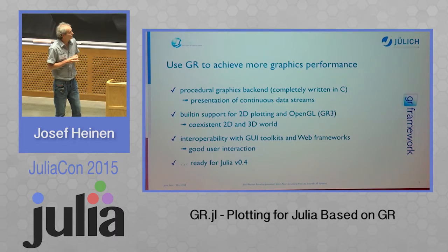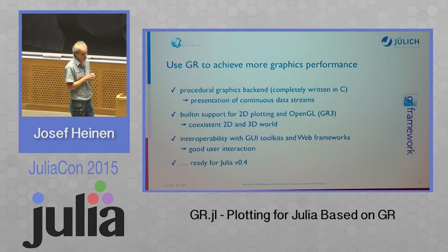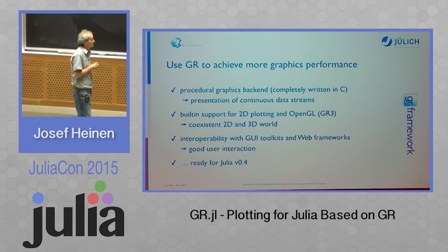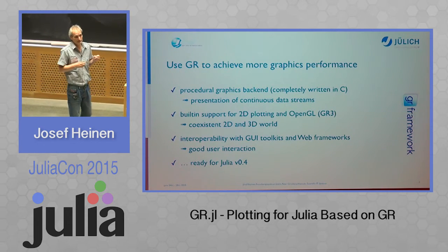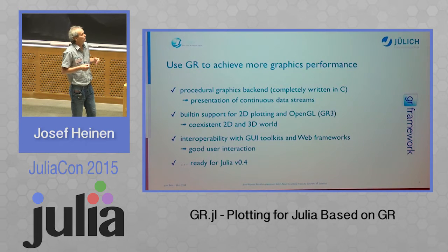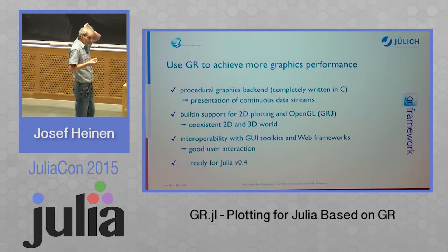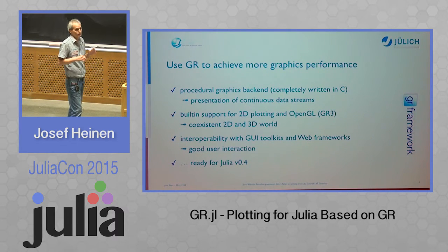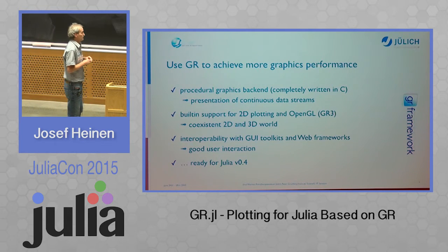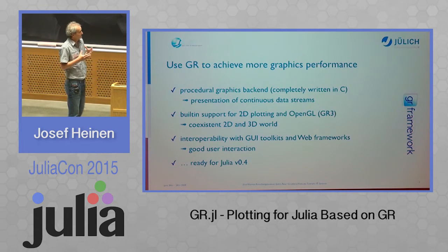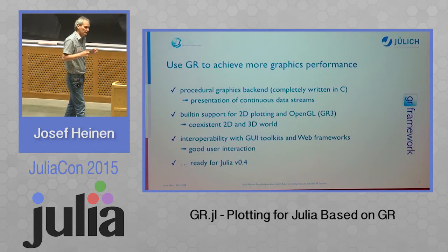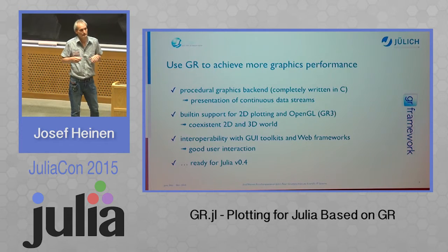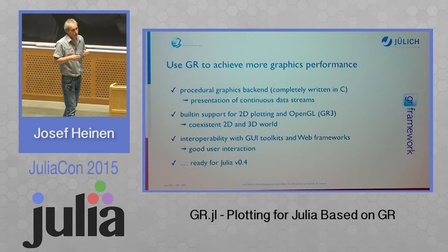So we took our old software and I wrote a Julia package for our graphics framework. In principle, it's a kind of procedural graphics backend — it's completely written in C, so I only had to write a C core wrapper. It was very easy to write this wrapper, very similar to what I did for Python. It has built-in support for both 2D and 3D, although in the 3D world we only support legacy OpenGL. One big advantage is its interoperability with GUI toolkits and web frameworks, which is very important for us because we had a lot of programs written in Qt or wxWidgets.